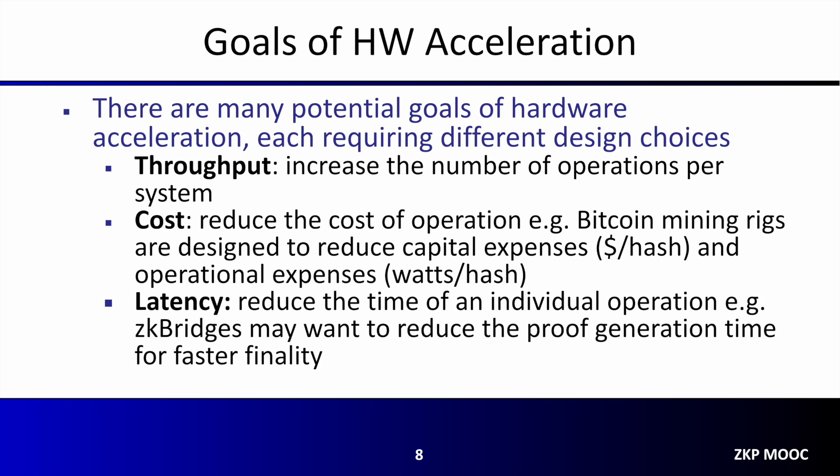A second possible goal for hardware acceleration is cost. When optimizing for cost, the goal is to reduce the capital and operational expenses associated with performing certain operations. In the case of Bitcoin mining machines, this means maximizing the amount of hashes per dollar of purchase price while minimizing the energy consumption and operational costs of performing each hash.